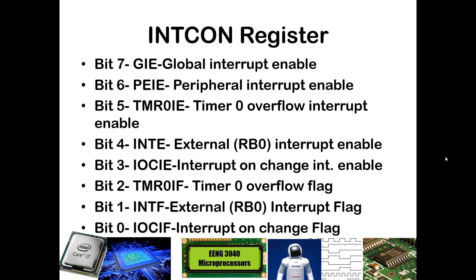The three interrupts that can be enabled from the INTCON register are the timer 0 overflow interrupt, the external interrupt, and the interrupt on change. The timer 0 overflow interrupt occurs when the timer 0 module, which is an 8-bit timer, increments from FF to 00, causing an overflow of the timer register. When that occurs, the timer 0 overflow flag, which is bit 2 of INTCON, is set. You can also have the external or RB0 interrupt enabled, which acts when the signal on RB0 has either a rising or falling edge. You can also have edge detection on any pins of interest by configuring the interrupt on change, though that requires more configuration than the external interrupt, which is specifically connected to RB0.